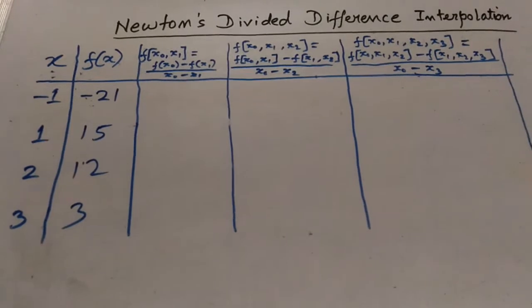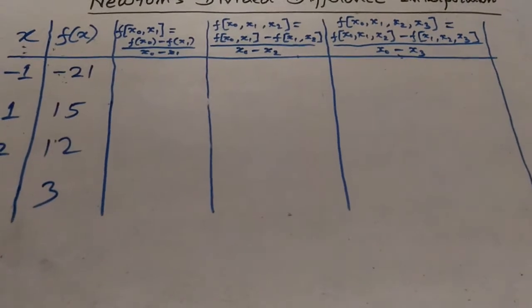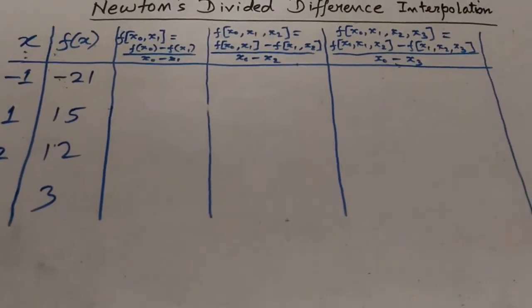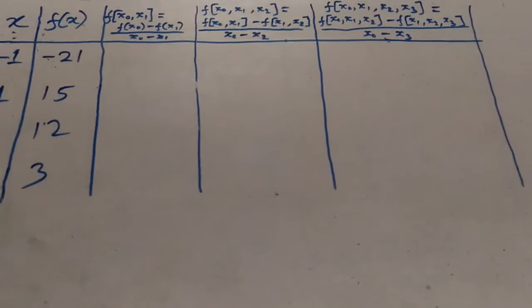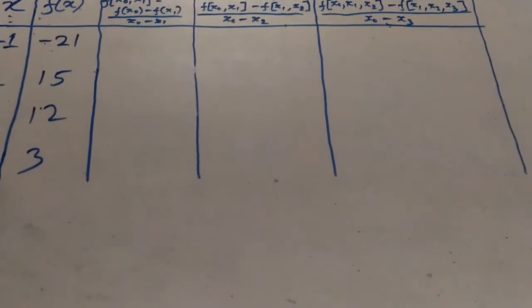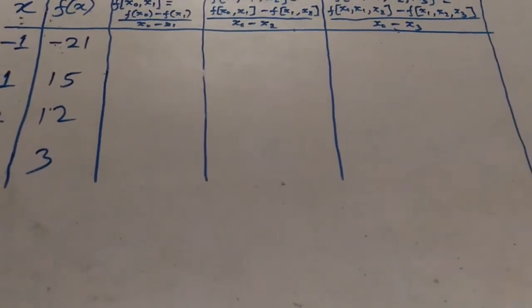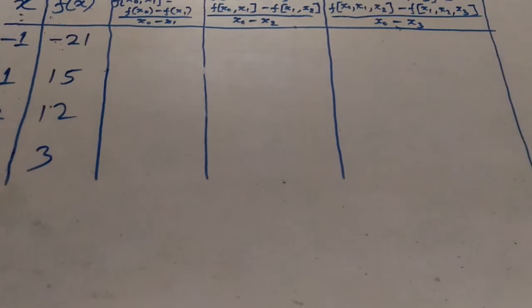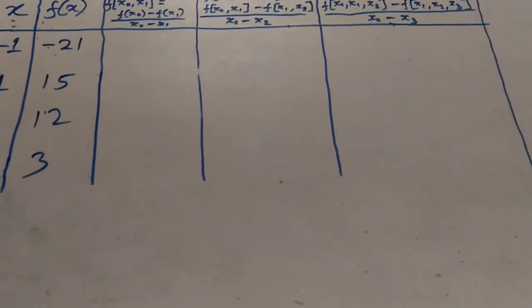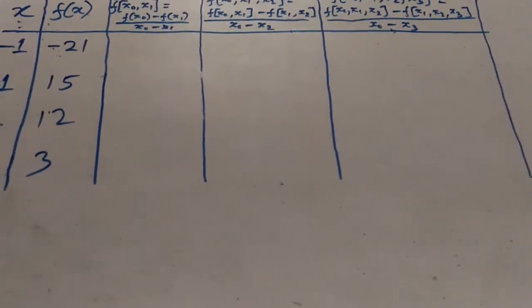Let us look at an example to make the concept more clear. The values of x and f(x) have been given. The values of x are minus 1, 1, 2, and 3, and their corresponding values of f(x) are minus 21, 15, 12, and 3. The rule for constructing the difference table is the same as Newton's forward and backward interpolation: the number of columns equals the number of elements in x minus 1. So we construct three columns since we have 4 elements.